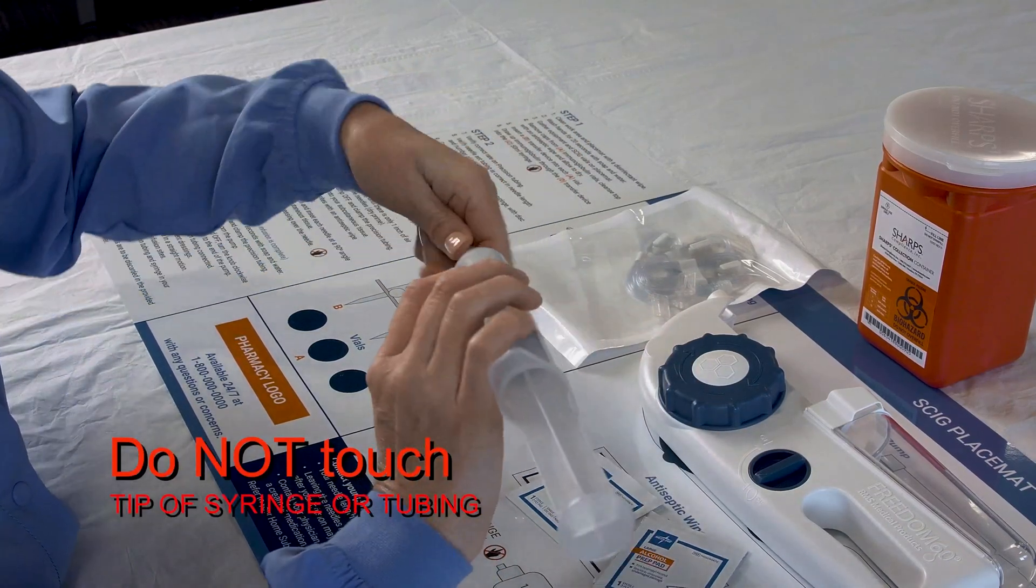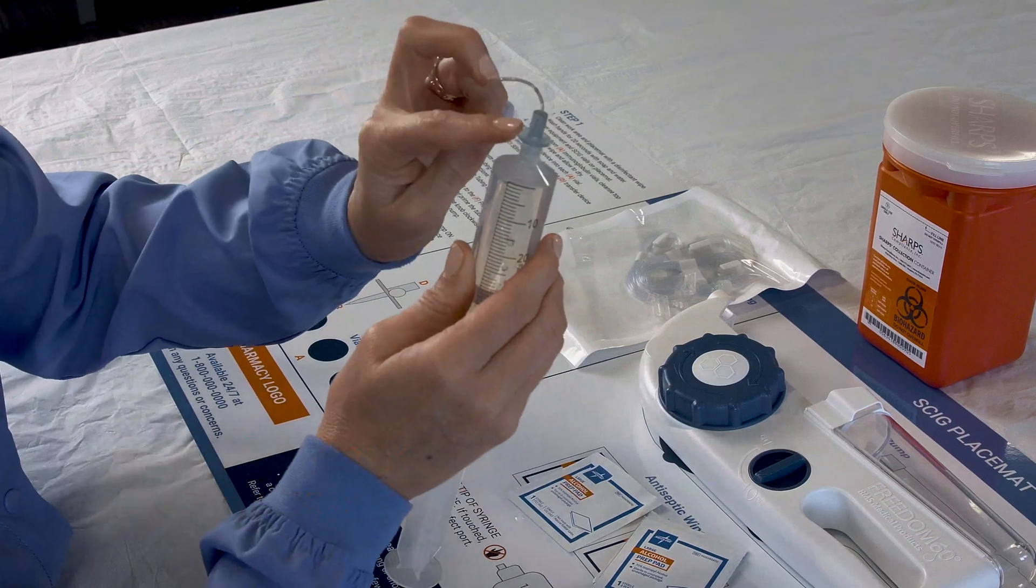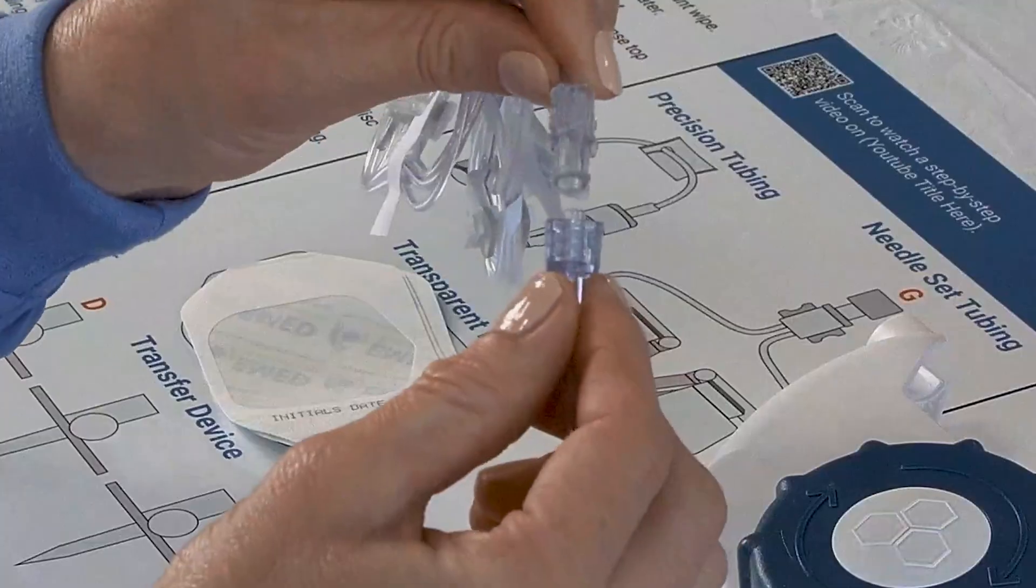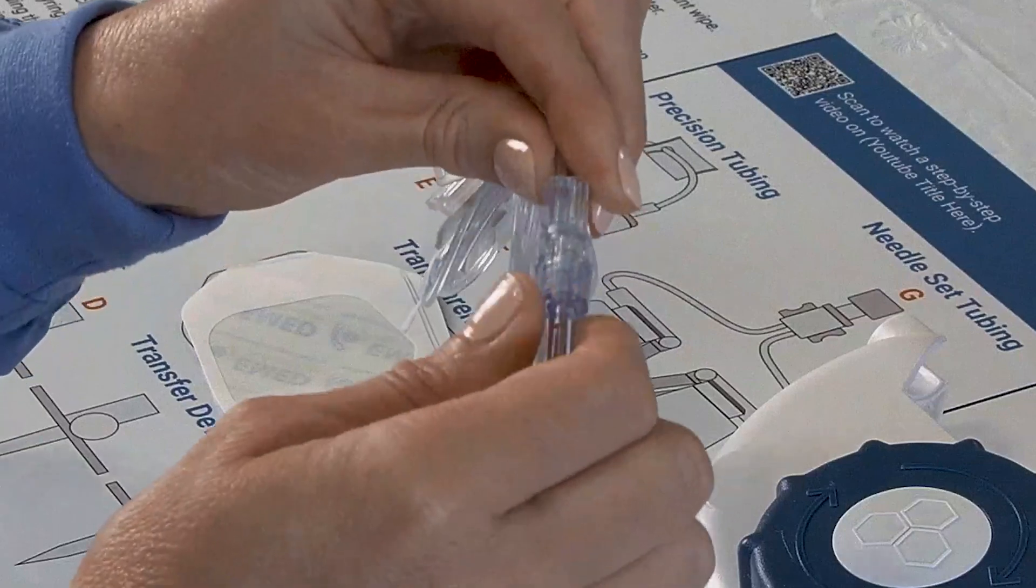Connect the tubing to the syringe with the disc closest to the syringe, like this. Connect it to the precision tubing, like this.